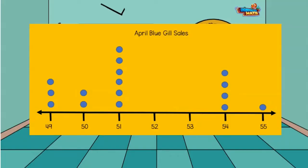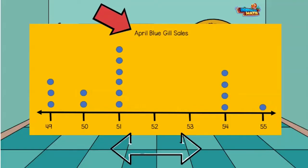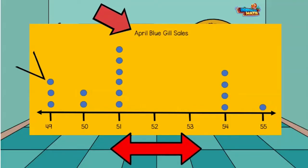The title tells me I am looking at the bluegill fish sold in April. This portion of the graph shows me the number of fish sold, and the dots represent how many times that particular number was sold.